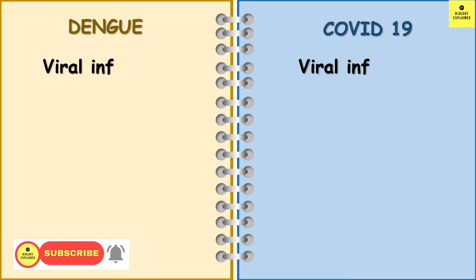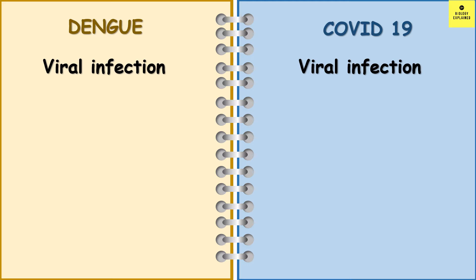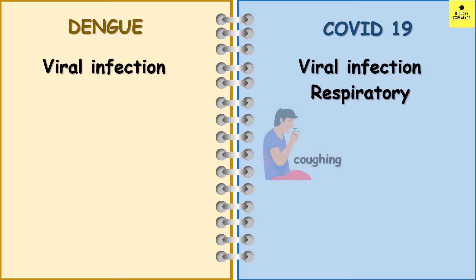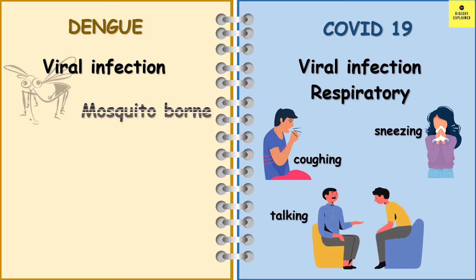Like COVID-19, dengue is a viral infection. However, the mode of spread of dengue is different from COVID-19. COVID-19 is a respiratory viral infection where it spreads from one person to another through respiratory droplets from the mouth and nose while coughing, sneezing, or talking.